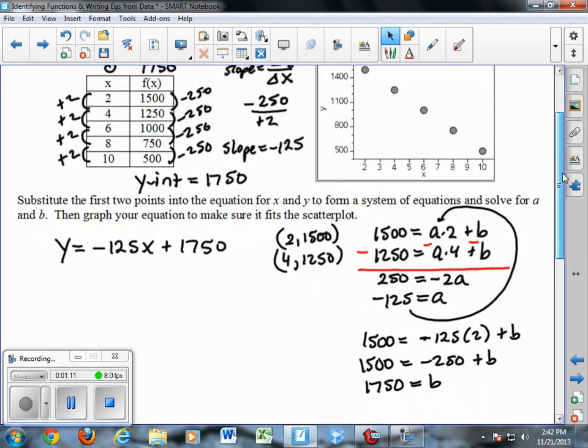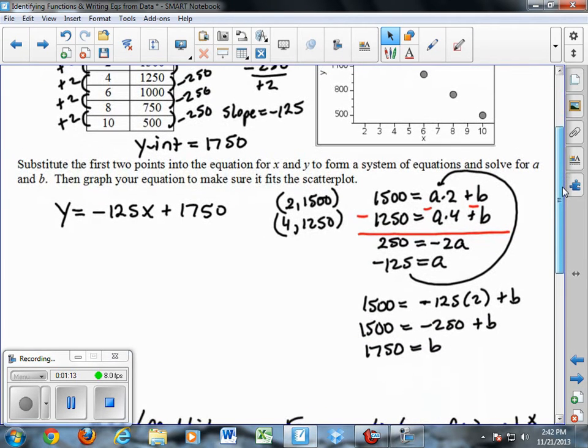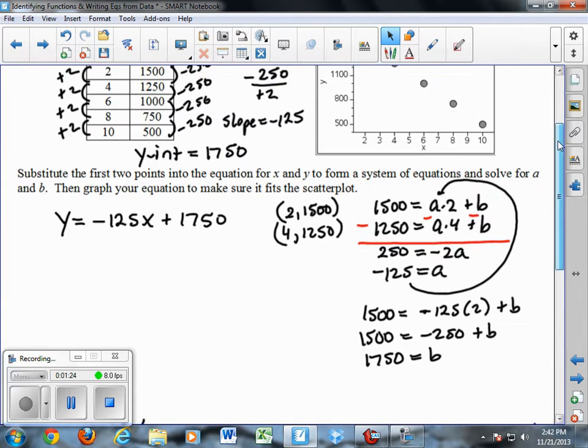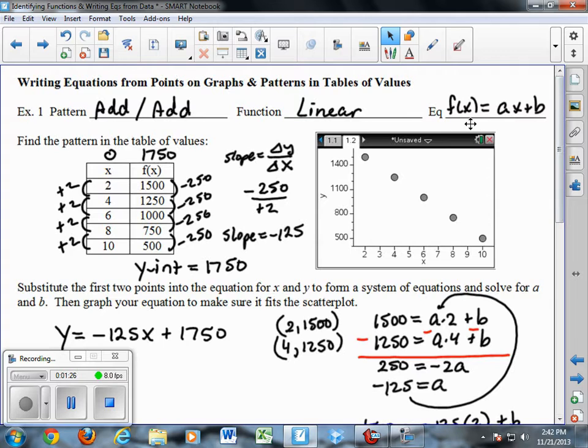To illustrate another way of finding equations that's going to lead into something we're going to do for other types of functions, we can also take two of the points and the general equation. I want to point out that we're using the general equation y equals ax plus b because our calculator uses a to represent slope instead of m, so I wanted to familiarize you with that.